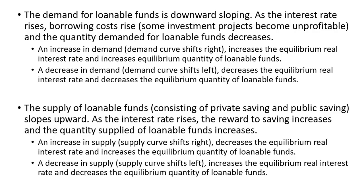The supply of loanable funds, consisting of private saving and public saving, slopes upward. As the interest rate rises, the reward to saving increases, and the quantity supplied of loanable funds increases. An increase in supply — the supply curve shifts right — decreases the equilibrium real interest rate and increases the equilibrium quantity of loanable funds. If we have a decrease in supply, the supply curve shifts left, which increases the real equilibrium interest rate and decreases the equilibrium quantity of loanable funds.